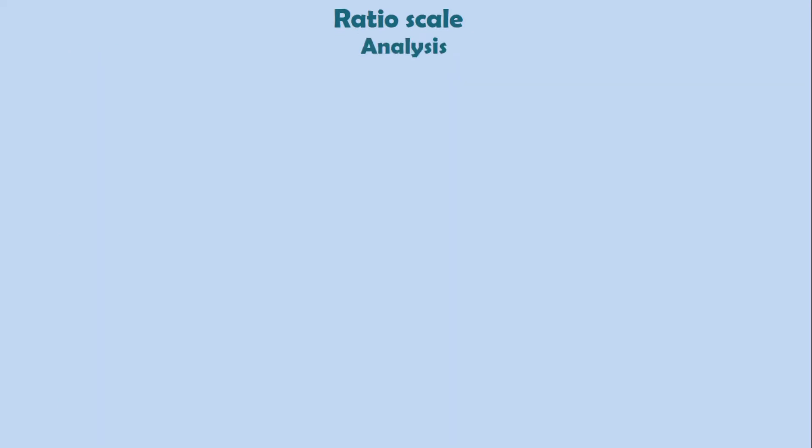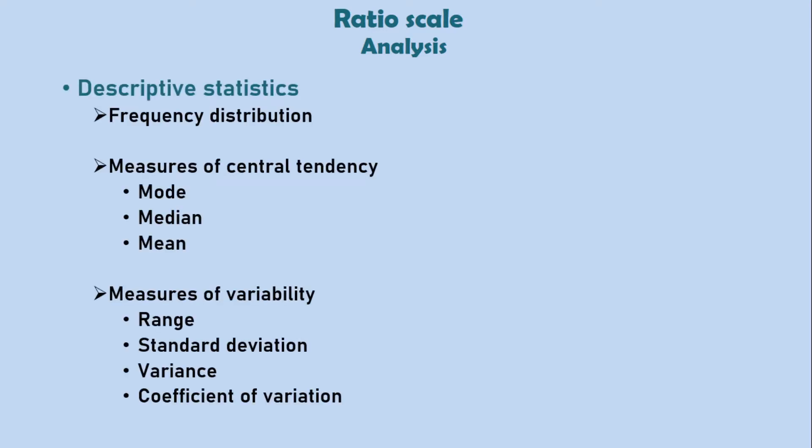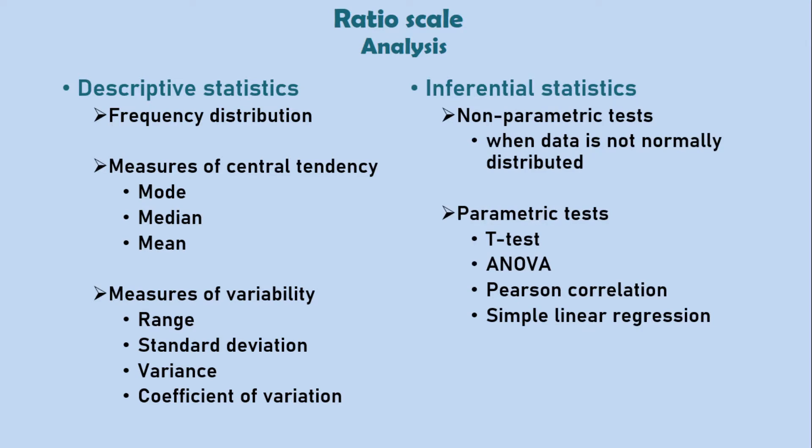Let's look at the following statistical analysis that can be conducted on variables measured on a ratio scale. We have descriptive statistics including frequency distribution. We have measures of central tendency: mode, median, and mean. Also, on the ratio scale, we can measure the range, standard deviation, variance, as well as the coefficient of variation. On a ratio scale, we can also perform inferential statistics including parametric tests like t-test, ANOVA, Pearson correlation. Also, in cases where the data is not normally distributed or does not meet certain assumptions, we can perform non-parametric tests for ratio scale variables.